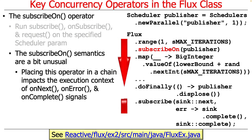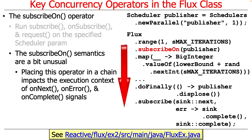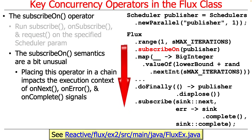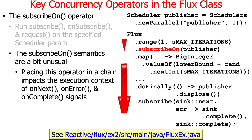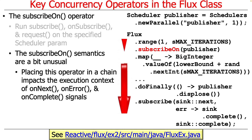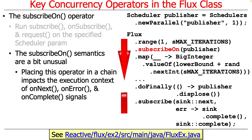Here's a simple example we'll look at in the case study: we're going to generate values from 1 to some max iterations, and we're going to subscribe this to run on a new parallel scheduler. We're going to publish on that scheduler, then start generating random big integers in the range of some lower bound plus some random value. All of that will take place in the new publisher scheduler, then we emit values with subscribe, and when we're done we shut down the publisher by disposing of it.